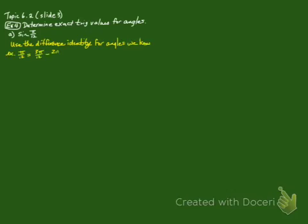Determine exact trig values for angles such as sine of pi over 12. Pi over 12 we can't work with, but we know of something that we can. We're using the difference identity and saying pi over 12 is the same as 3 pi over 12 minus 2 pi over 12.